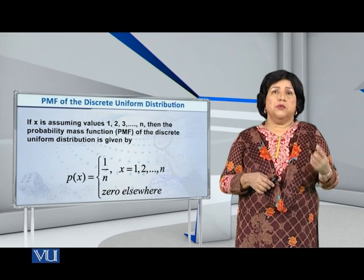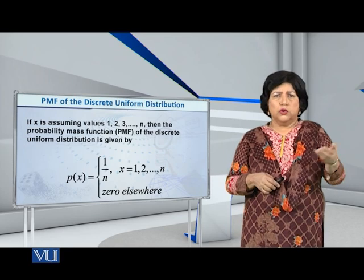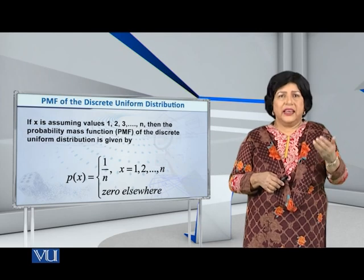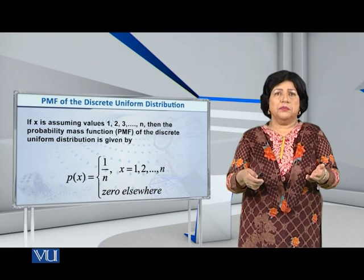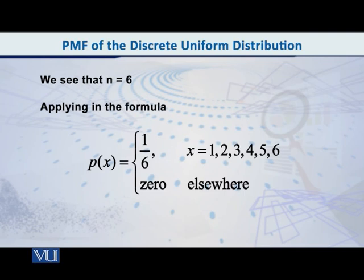So let me give you an example. Suppose that we toss one fair die only one time. Then how can we write the PMF of this distribution? According to what I have just presented, we can see that n is equal to 6, because there are 6 faces on it. So the number of dots which are on it, of course they are 1, 2, 3, 4, 5, and 6.